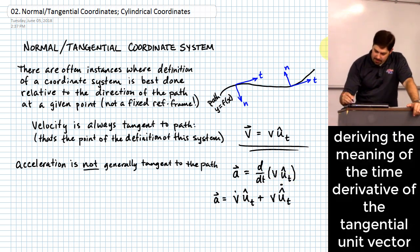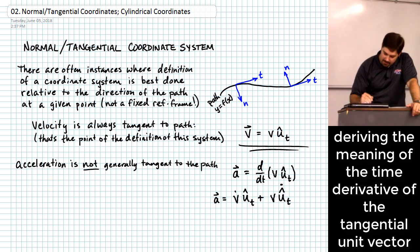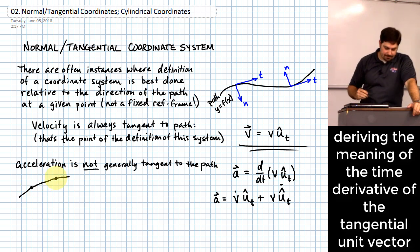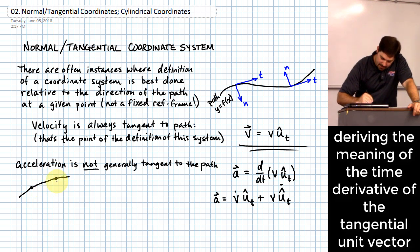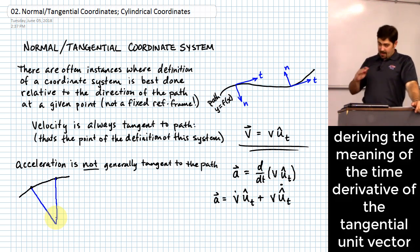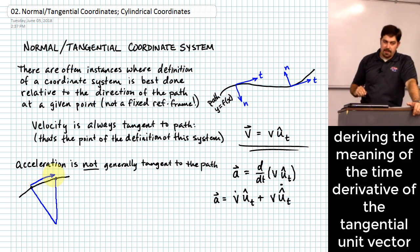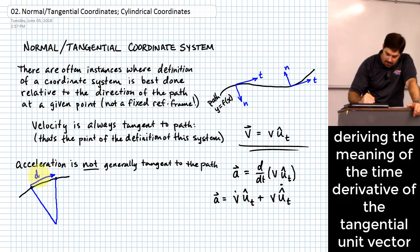As a particle moves along this path, it might start in one location and go to another location, and in each of those locations it's going to have a particular radius of curvature associated with the path. Wherever the particle's at and however it's curving, we could define what the radius of curvature is instantaneously at that point. We're going to say that the travel from one point to the next is infinitesimally small — we'll call that DS.